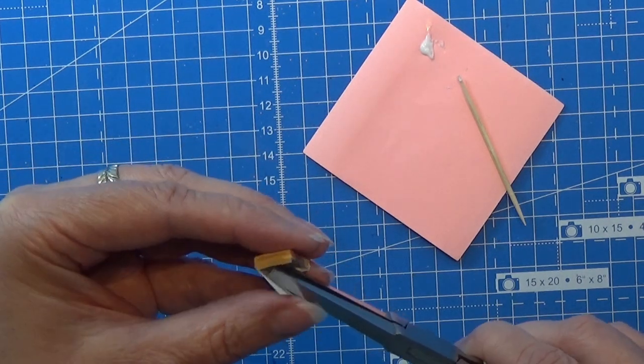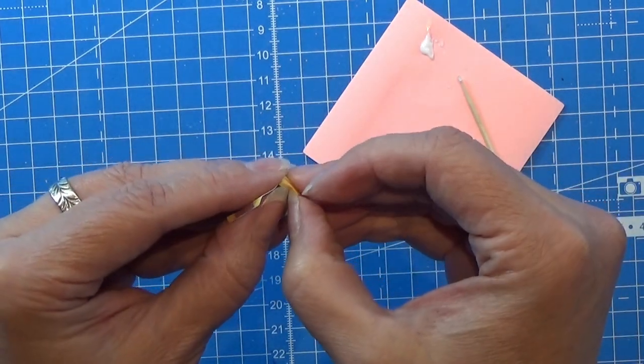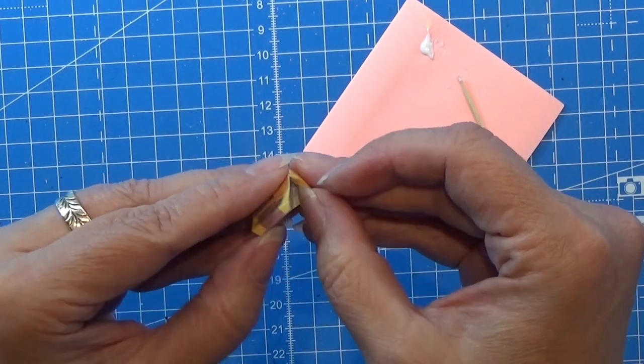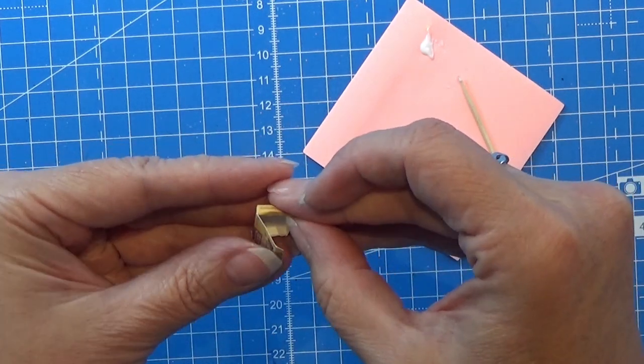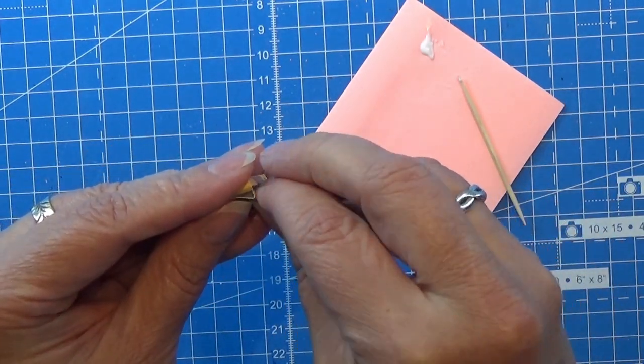So I'm just trying to bend it nicely with my pliers here, and now you can close the little box.